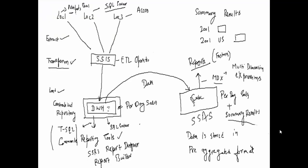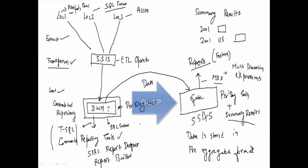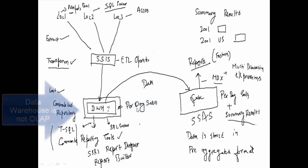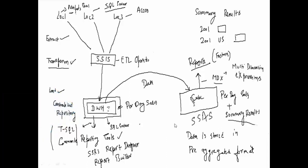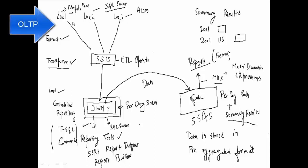To clarify some terms: this cube is called OLAP, and the data warehouse is also called an OLAP cube. The data sources are called OLTP.